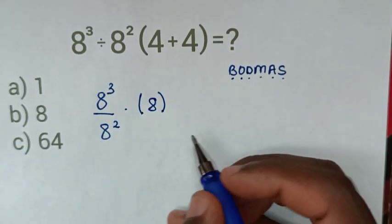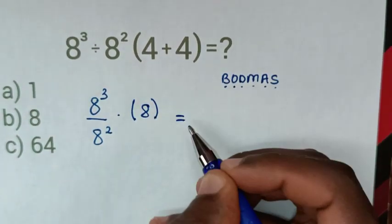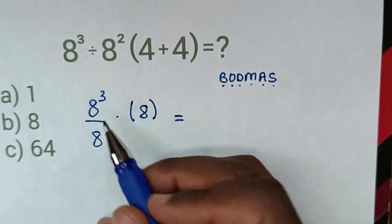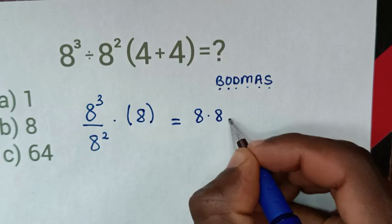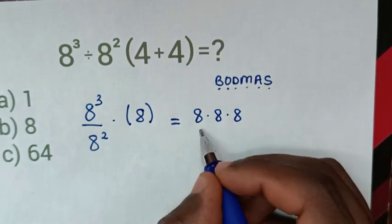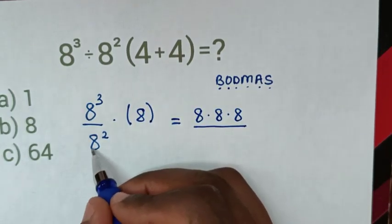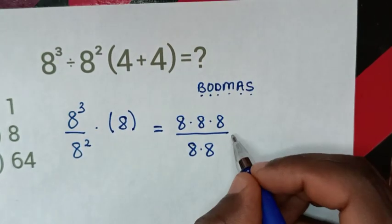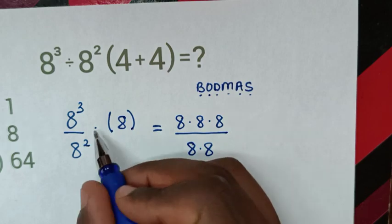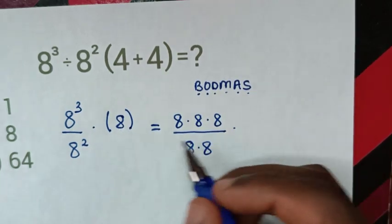Then in the next step, we can simplify. Then in the next step, it will be equal to, from 8 power 3 is same as 8 times 8 times 8, then over 8 power 2 is same as 8 times 8. Then we open this bracket, so it will be times 8.